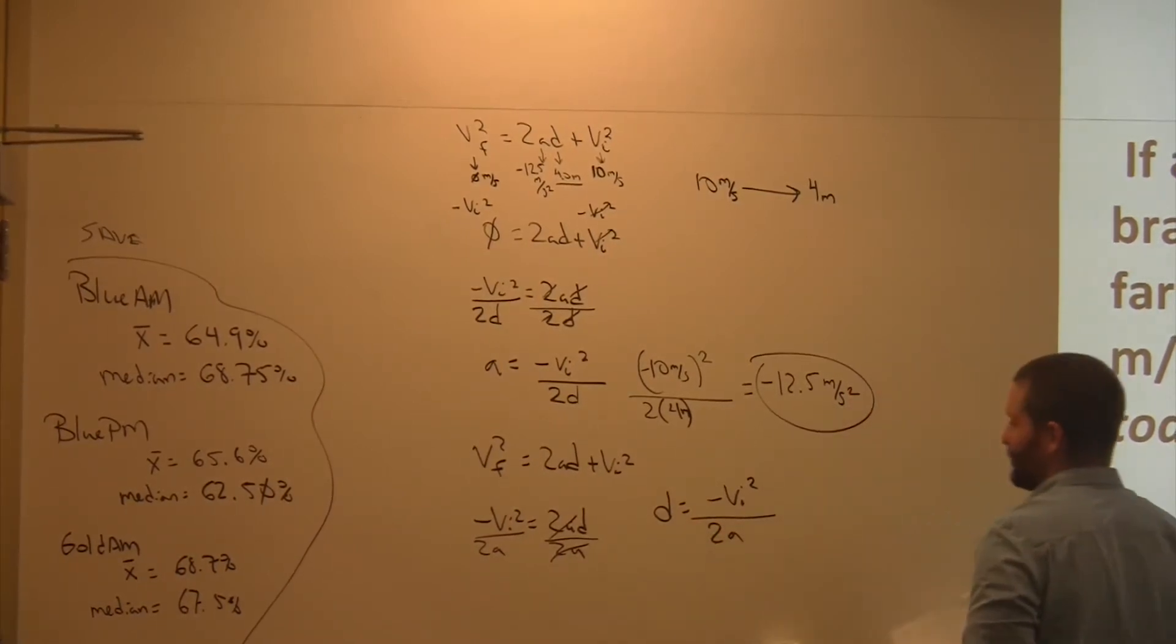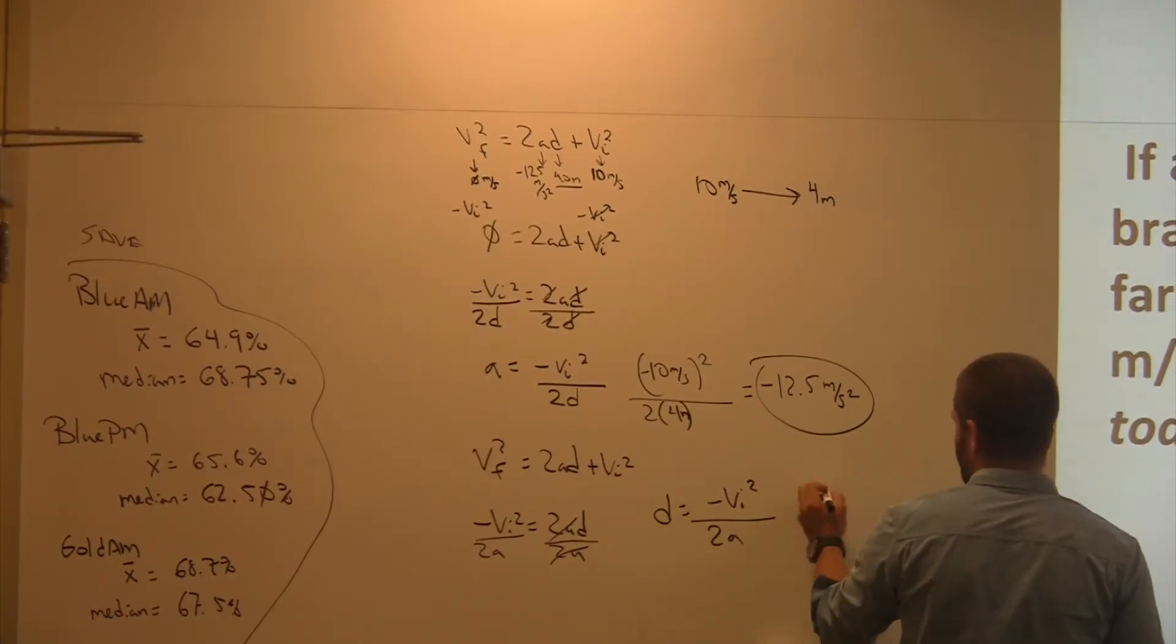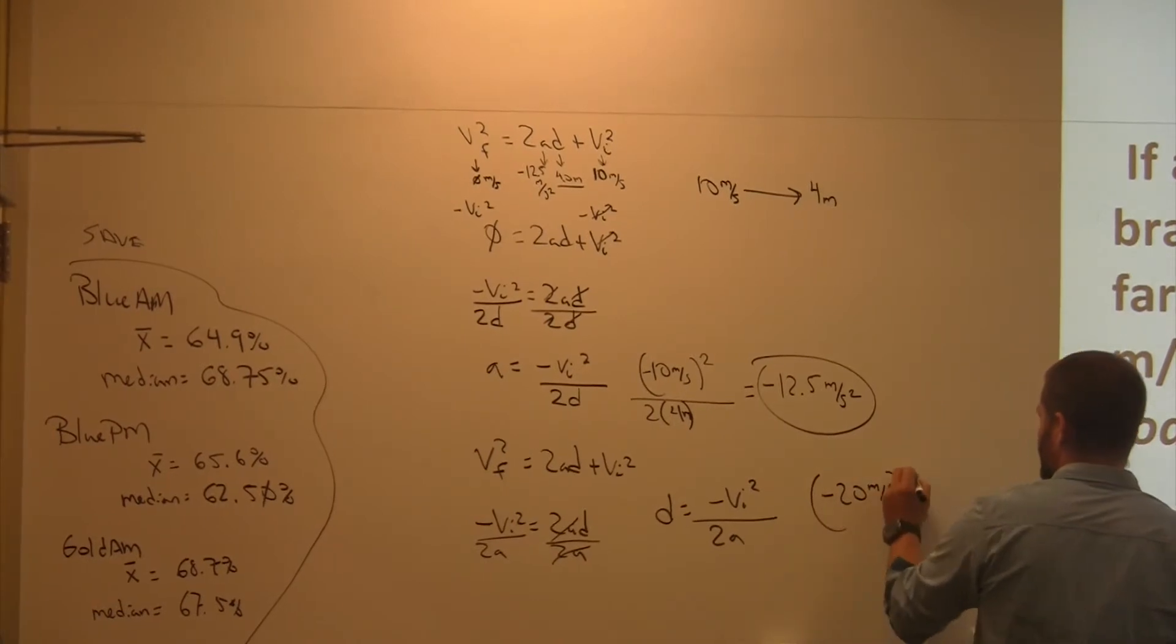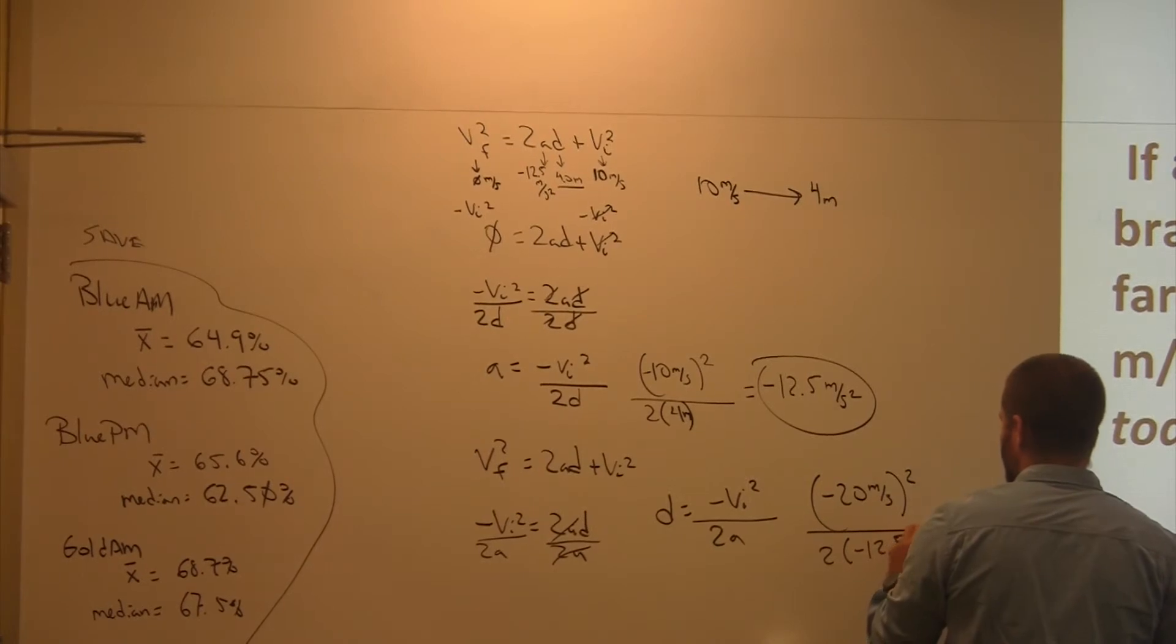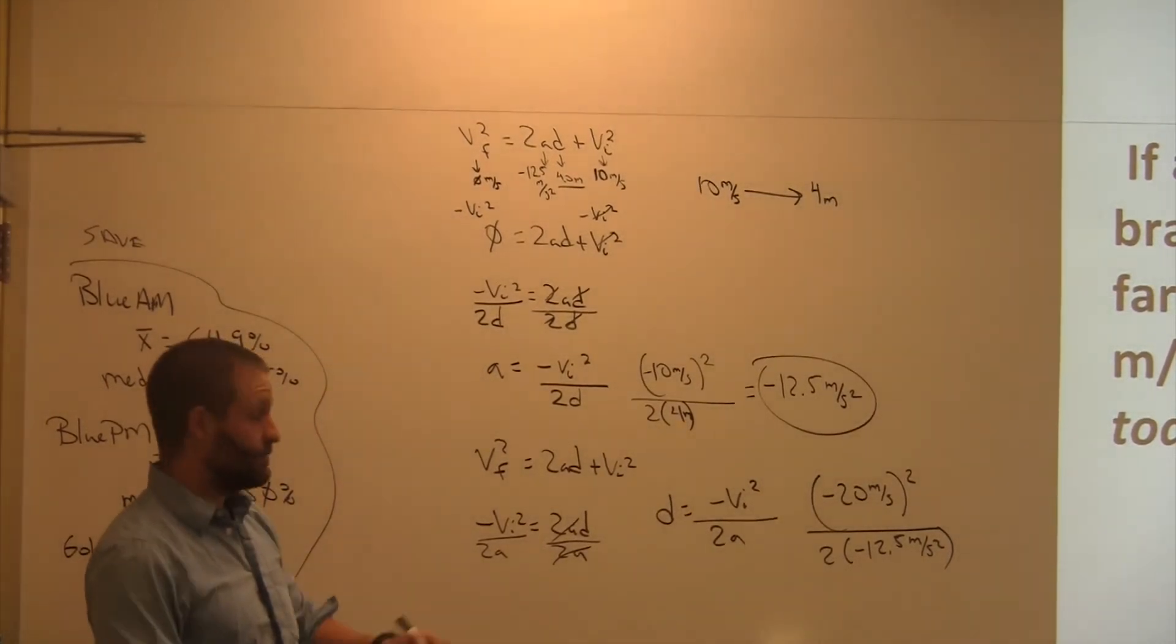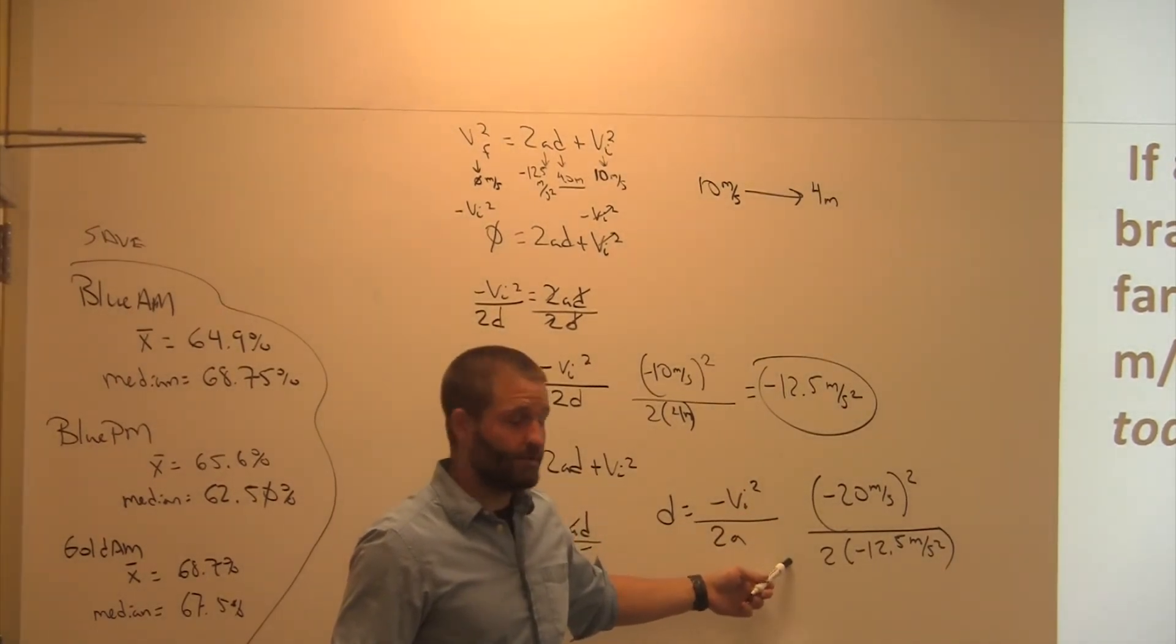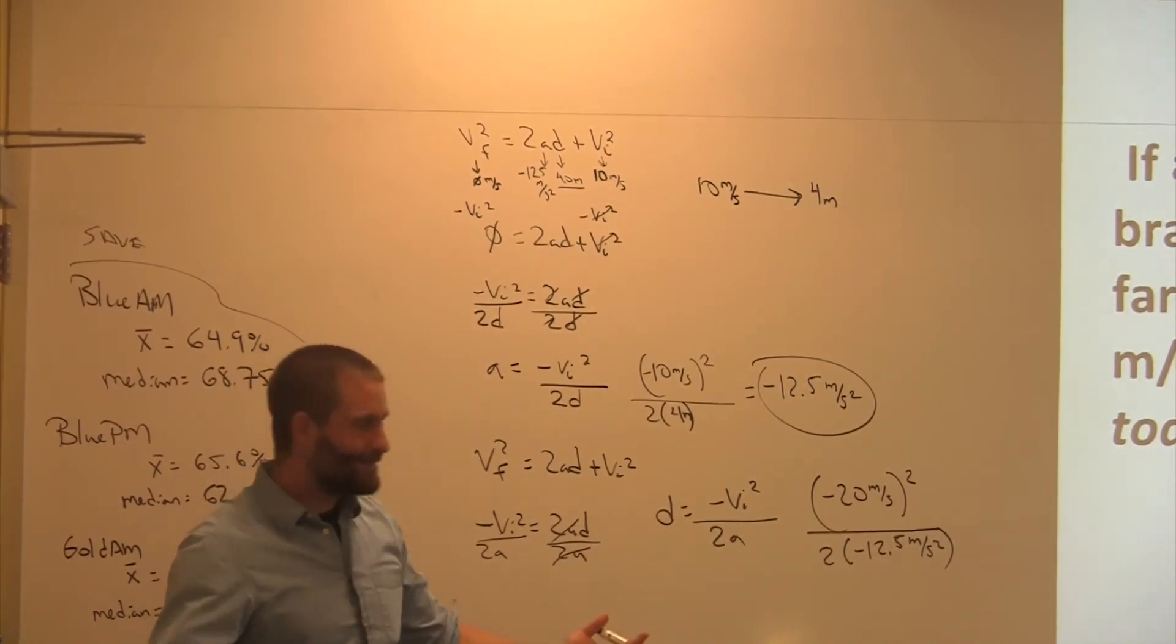Now I plug and chug or replace and substitute. What's my initial velocity on the second one? 20. Negative 20 meters per second squared divided by 2 times negative 12.5 meters per second. Is that going to be a positive or negative number? Positive. Negative divided by negative is a positive. Does that make sense that my distance is going to be positive? Yes.